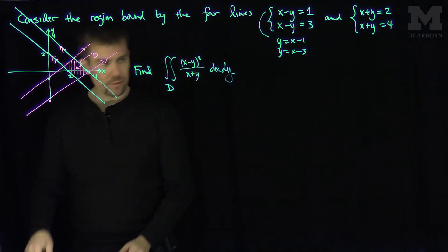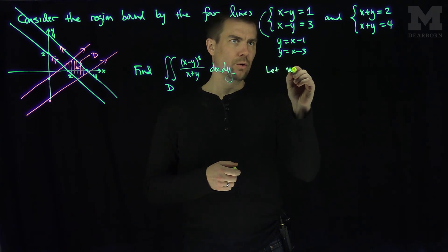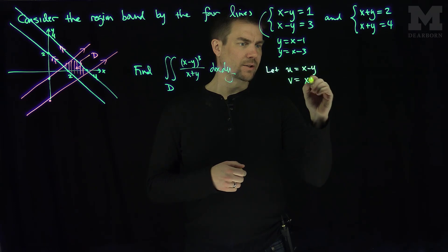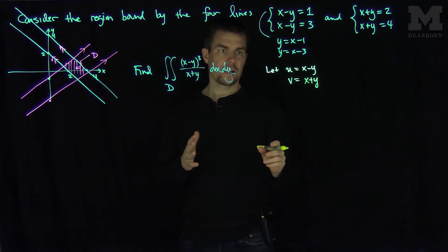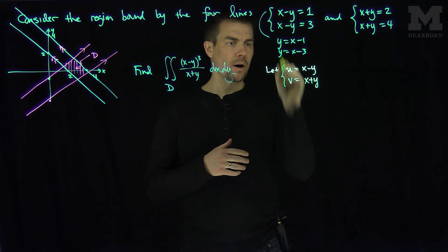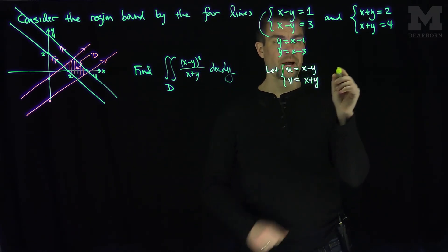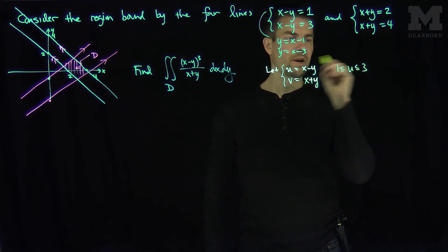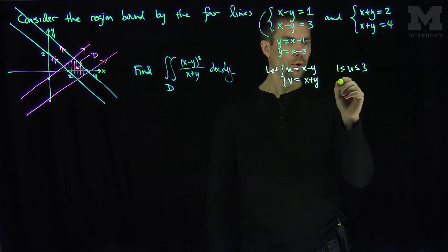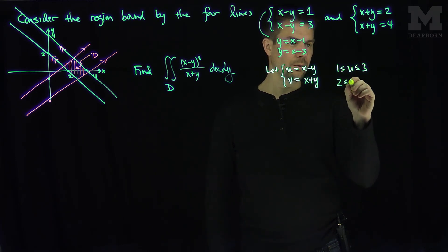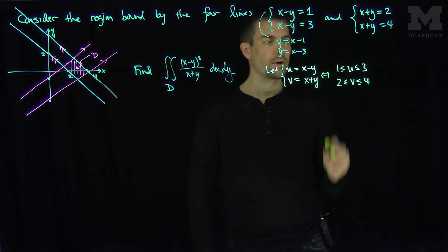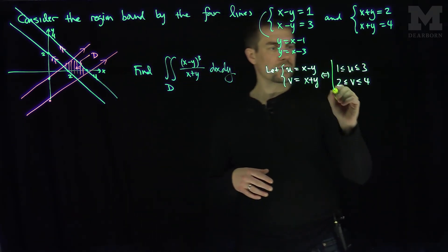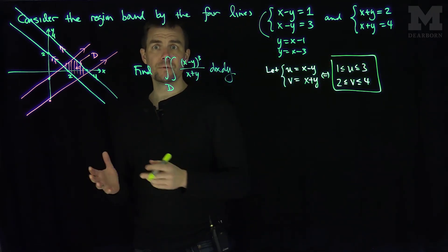I'm going to introduce new variables: let u equal x minus y, and let v equal x plus y. From this substitution, I know that u goes between one and three, and v goes between two and four. So while this region is very complex in xy-coordinates, it becomes a simple rectangle in uv-coordinates.